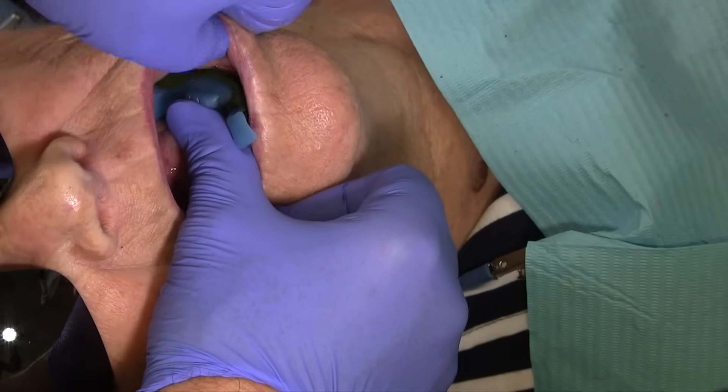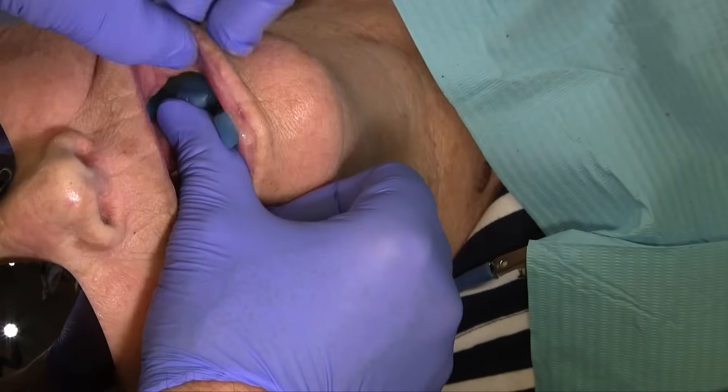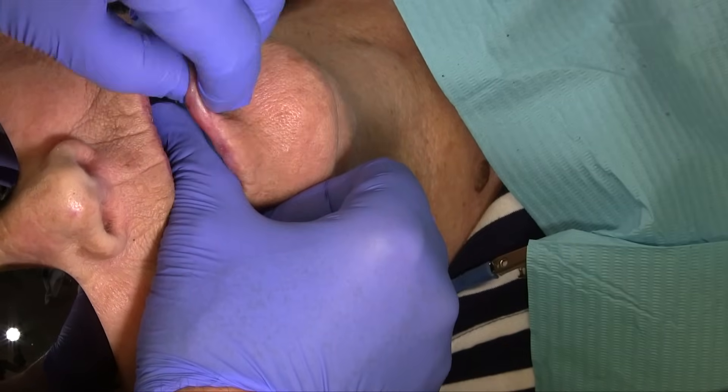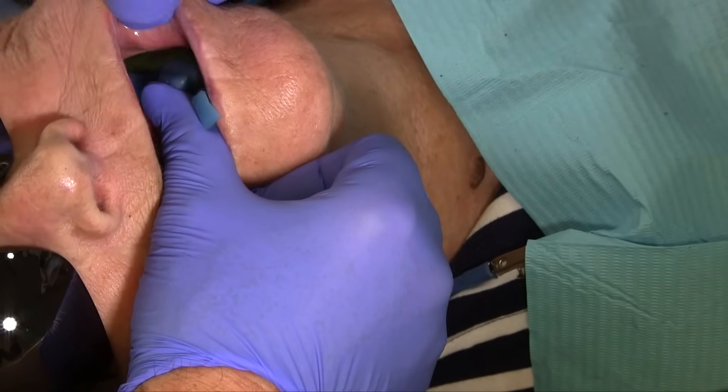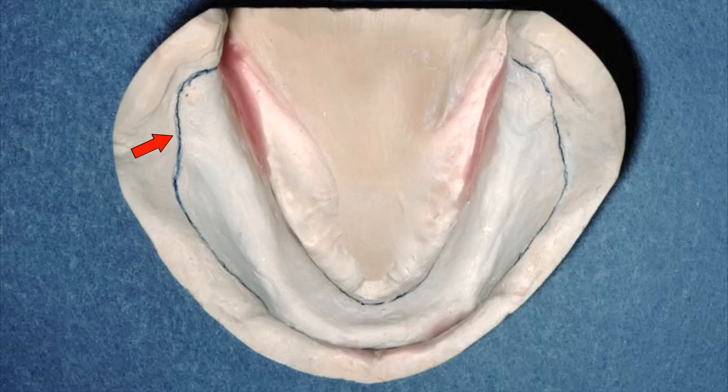Border molding in the mandible is generally similar, but it is a little bit more challenging due to the changing position of the floor of the mouth. Pull the cheeks and lips upward and make circular movements. The posterior buccal aspect should be molded to allow activity of the masseter.